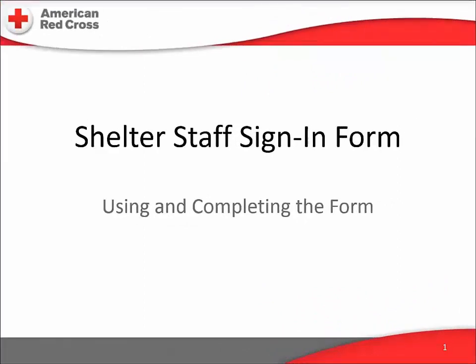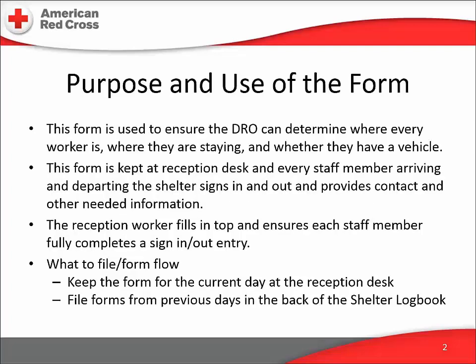This video is part of a series intended to give an overview of the forms used by the American Red Cross in our shelter operations. The shelter staff sign-in form is a critical record for the operation of every congregate shelter we open. The form is intended to maintain a current, accurate list of which staffers are physically inside the shelter at any given moment. Every shelter has a prepared evacuation plan which will outline what to do if the building has to be evacuated. The plan will designate a meeting place for all clients and staff, where the shelter manager will make sure everyone is out of the shelter.